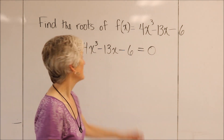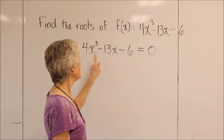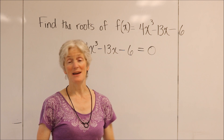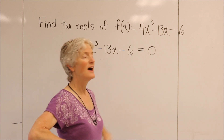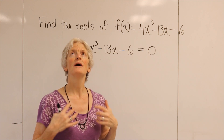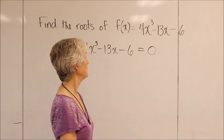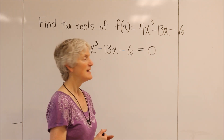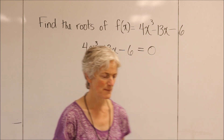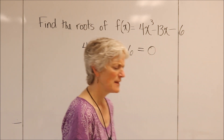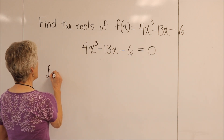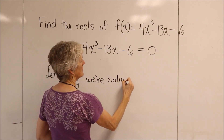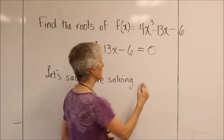I could try to just look at this and think of some numbers that might work, that might make zero. But there are a lot of numbers in the world, so it would be cool if I could hone in on a list of possible roots — possible x values that would make this true. To do that, we're going to use a cool little trick. To demonstrate that trick, I'm going to give you another example.